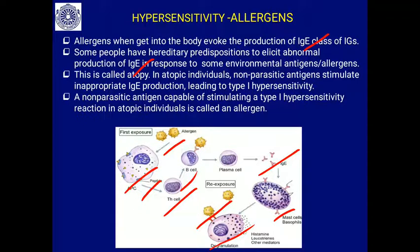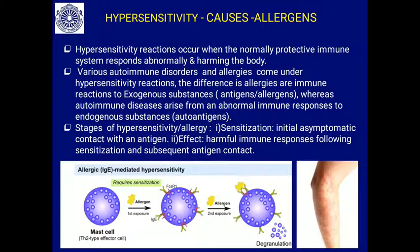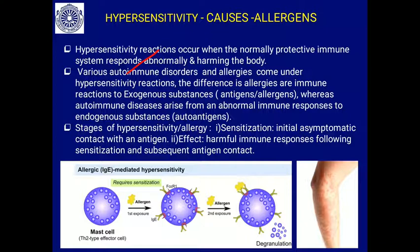People who are genetically predisposed to allergic reactions are called atopic individuals. This is called atopy. In atopic individuals, non-parasitic antigens stimulate inappropriate IgE production, leading to type 1 hypersensitivity. A non-parasitic antigen capable of stimulating a type 1 hypersensitivity reaction in atopic individuals is called an allergen. Hypersensitivity reactions occur when the normally protective immune system responds abnormally and harms the body.